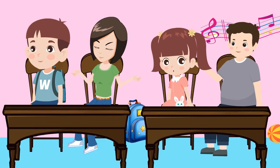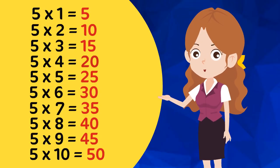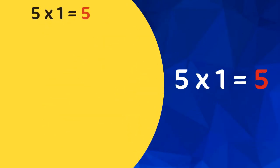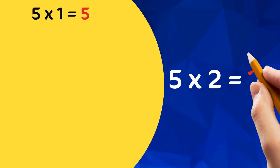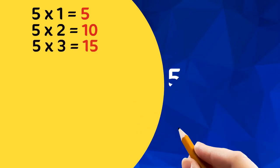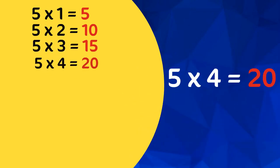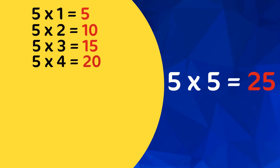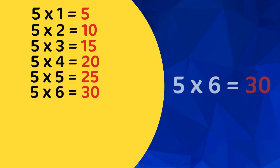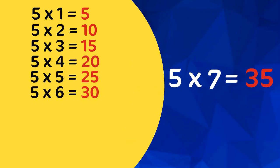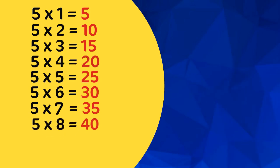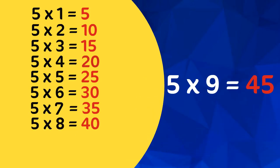Now let's speak together. 5 1's are 5. 5 2's are 10. 5 3's are 15. 5 4's are 20. 5 5's are 25. 5 6's are 30. 5 7's are 35. 5 8's are 40. 5 9's are 45.